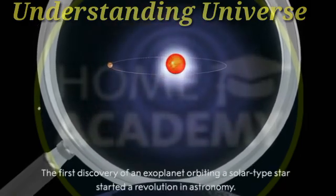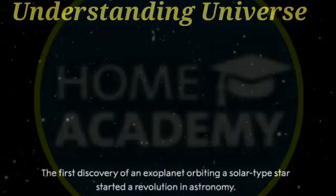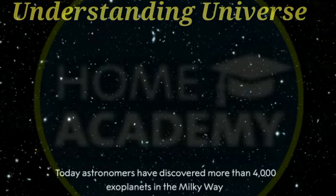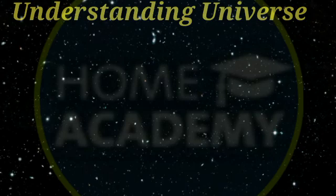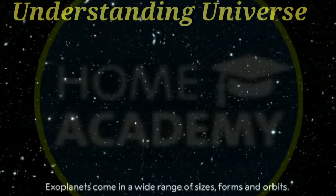The first discovery of an exoplanet orbiting a solar-type star started a revolution in astronomy. Today, astronomers have discovered more than 4,000 exoplanets in the Milky Way, and scientists are surprised by how different planetary systems can look. Exoplanets come in a wide range of sizes, forms and orbits.